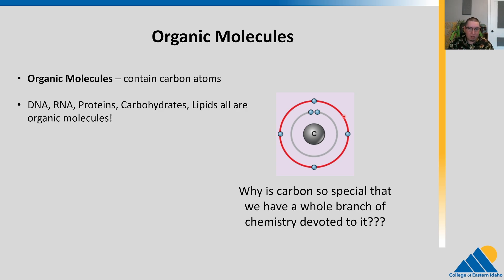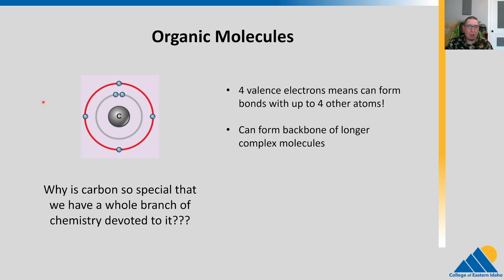Shapes are what chemistry is all about. Why is carbon so special? Why do we have a whole branch devoted to it? Because of those four bonds. Things like DNA, RNA, protein, carbohydrates, and lipids are all organic molecules — and that's what we're made up of. Those four valence electrons mean you can get four other atoms bonded on there, and that also means you can use carbon as the backbone of very, very long chains.